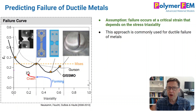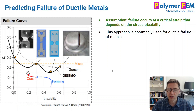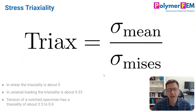One way to do that is to go back and think about what people have done in the automotive industry, particularly for metals. What's pretty common in that strategy is to use a failure condition that's based on a critical strain — a strain-based condition — but then to make it work you add a dependence on stress triaxiality. So what is stress triaxiality? Well, stress triaxiality is basically the ratio of the mean stress divided by the Mises stress.